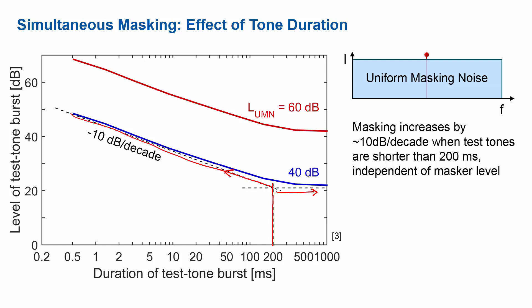That increase is done at 10 dB per decade. In other words, if we go from 200 ms to 20 ms — which is a decade, a factor of 10 in duration — then we have to raise the level of the probe signal by 10 dB. And the same holds true if we shorten it further to 2 ms, again about a 10 dB difference. So in short, if your signals are shorter than 200 ms, you need to increase their level to compensate for the shorter long-term energy. In other words, you could consider the auditory system as a long-term integrator over 200 ms that looks for the energy of the tone to detect it in the masker.